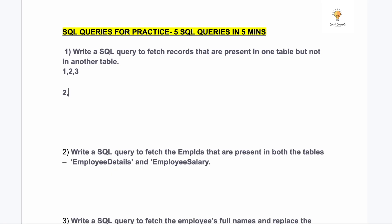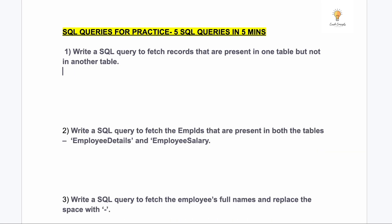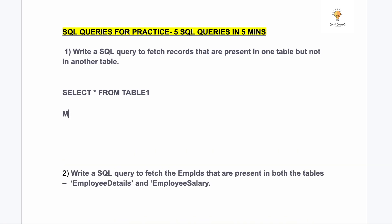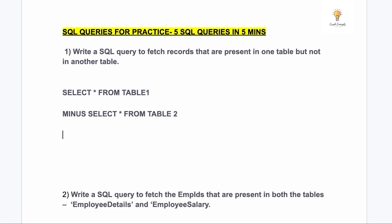Two and three also exist in table two, so we need to discard them and our output should only be 1. If you're using SQL Server, you can use the MINUS operator: SELECT * FROM table1 MINUS SELECT * FROM table2.